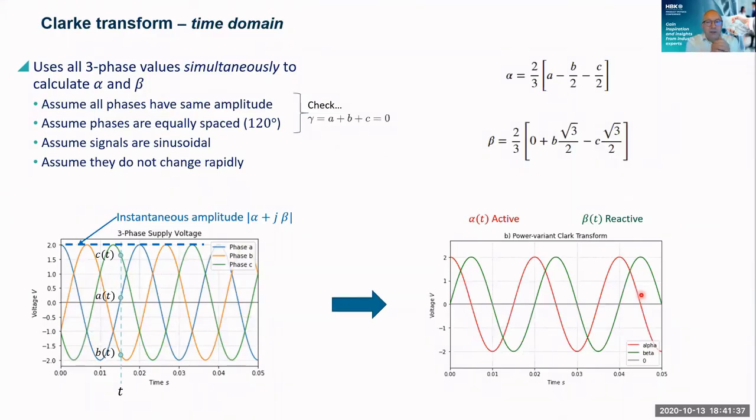So the Clarke transform works in the time domain and it works on this simple principle. If I know these are all sinusoidal waves, they're all the same amplitude, they're all the same frequency, and they're equally spaced 120 degrees apart, then if I measure the three voltages simultaneously, I can calculate alpha and beta at any point in time.